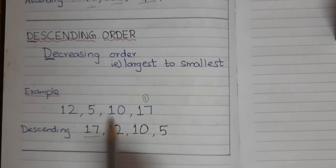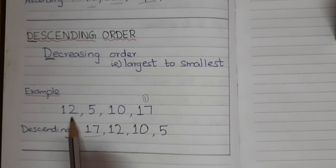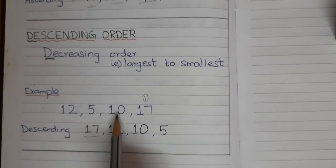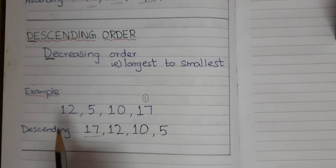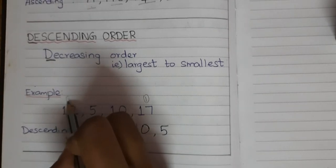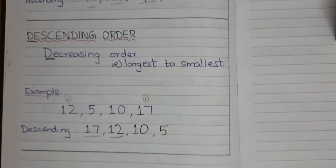Next, we have to check this 3 set of numbers. That is 12, 5, 10. Out of these 3 numbers, which is the largest number? 12. Right. 12 here.